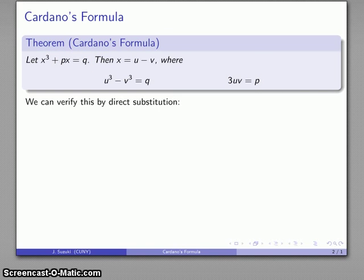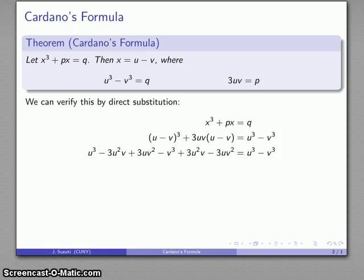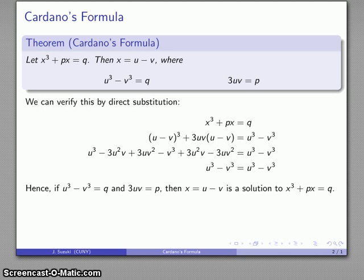This one's actually fairly straightforward to prove. We can do this by direct substitution. Here's my original cubic equation. If I let x = u - v, then that expands out as follows, and then I can take advantage of the relationship u³ - v³ = q, 3uv = p, and expand and simplify and end up with a true statement, which says that x = u - v, u³ - v³ = q, and 3uv = p are going to give us a solution to the original equation.